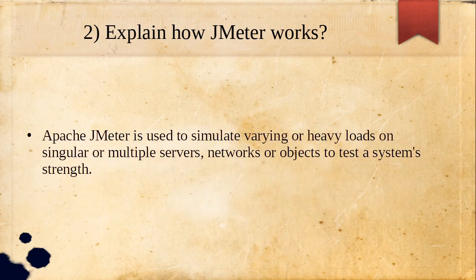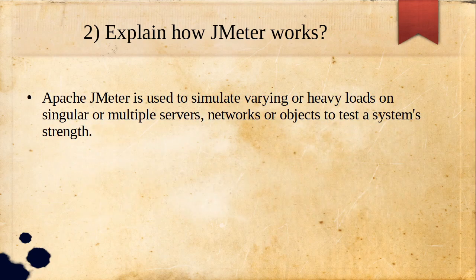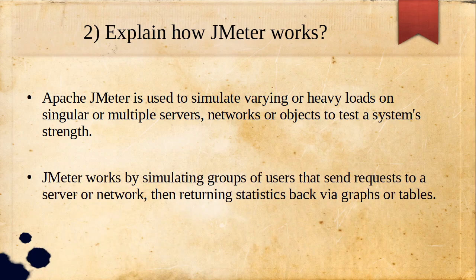Second question: how does JMeter work? JMeter is used to simulate varying or heavy loads on singular or multiple servers, networks, or objects to test a system's strength. JMeter works by simulating a group of users that send requests to a server or network, then returning statistics back via graphs or tables — in our case, listeners give us those graphs and tables.